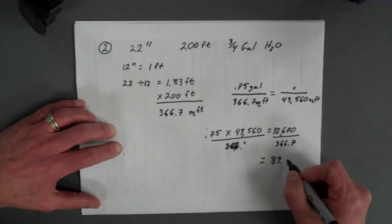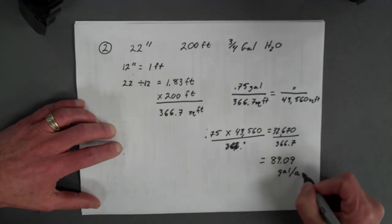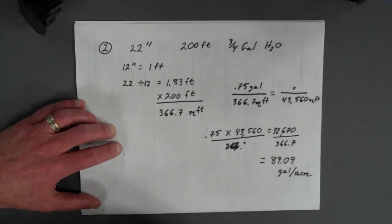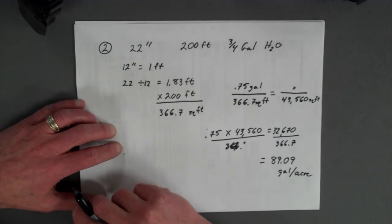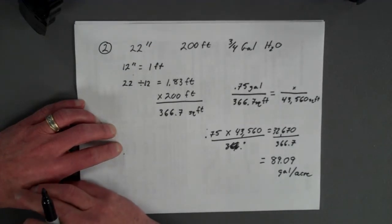.09, if you want to be exact, gallons in one acre. That's what that backpack sprayer, at the rate that individual was walking, was applying.